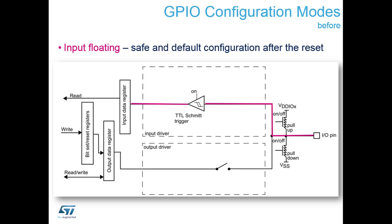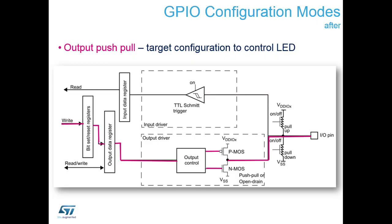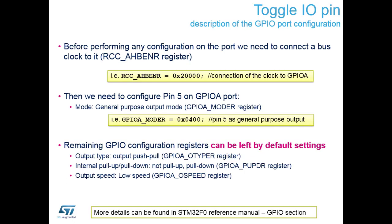The GPIO configuration mode by default is input floating — the normal reset condition for the STM32 F072. We need to change that to output push-pull by setting some registers. We'll find the MODER register in the GPIO section of the reference manual. The value we need to load into MODER is 0x400 hexadecimal so that PA5 is configured as output push-pull mode.